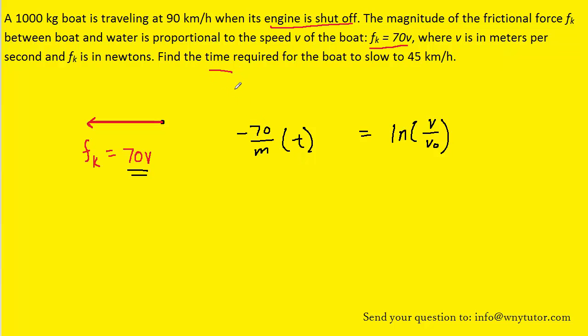Now of course the question asks for the time required for the boat to slow down to 45 km per hour, so we need to solve this equation for time. We'll multiply both sides by m, and then divide both sides by negative 70.